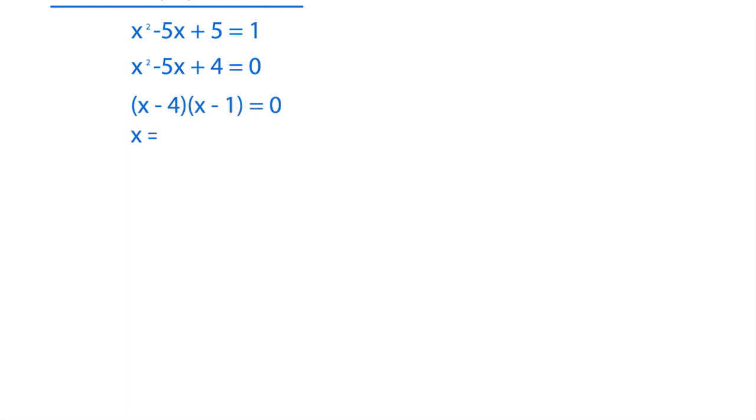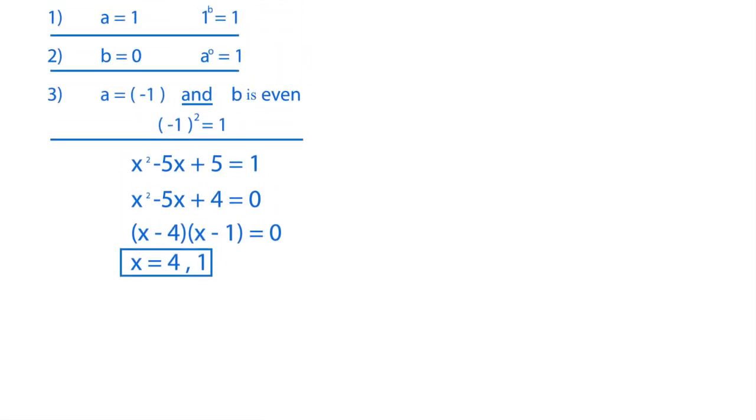So x is equal to 4, and x is equal to 1. So these are the values of x for which we make A equal to 1. So we've got two solutions so far.